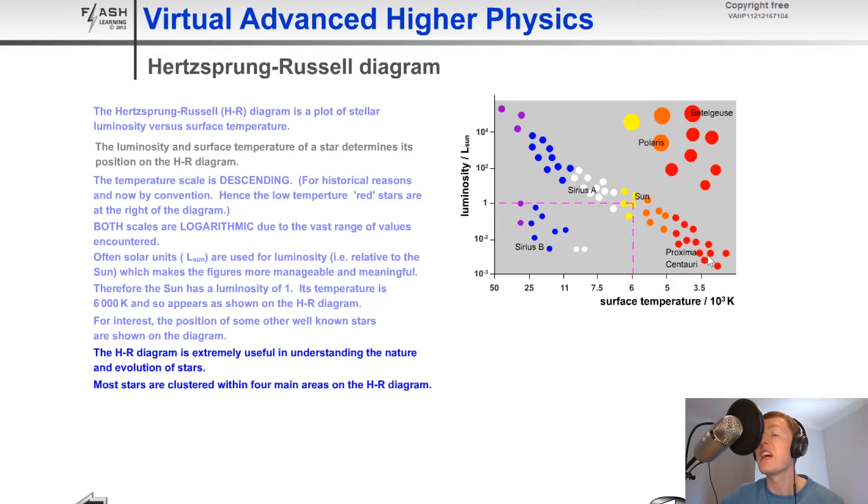Over in the giant region, we have Betelgeuse. And then getting hotter, we have Polaris in the supergiant region. Going below the main sequence to the white dwarfs, we have white dwarfs such as Sirius B.